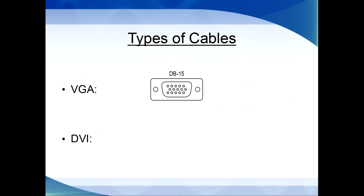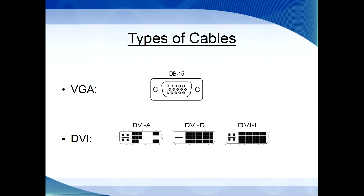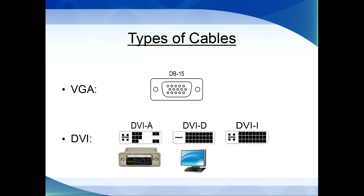Also, there is only one VGA cable and three types of DVI cable. These three DVI cables are DVI-A, DVI-D, and DVI-I. DVI-A is only found when you are converting VGA to DVI. DVI-D is great for sending high-quality digital video from your computer to your monitor. DVI-I is good for older graphics cards that support DVI but still send analog video signals.